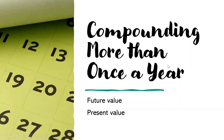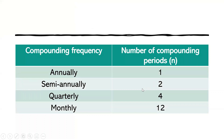Now let's talk about compounding more than once a year. When calculating compound interest, the number of compounding periods makes a significant difference. The basic rule is that the higher the number of compounding periods, the greater the amount of compound interest. It is important to know the number of times interest will be earned if compound interest is applied.